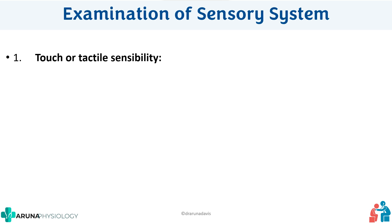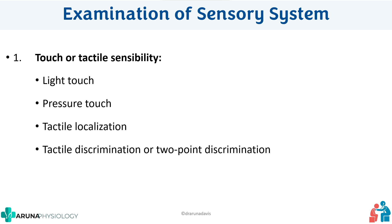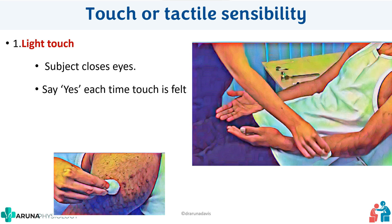First we will study how to examine touch sensation. Under touch we have four headings: light touch or fine touch, pressure touch or crude touch, tactile localization, and tactile discrimination or two-point discrimination. For light touch, you can use cotton. Ask the subject to close the eyes, then ask him to say yes every time a touch is felt. Dab the skin surface gently using the cotton — remember you are not supposed to apply pressure or drag it, just dab gently.